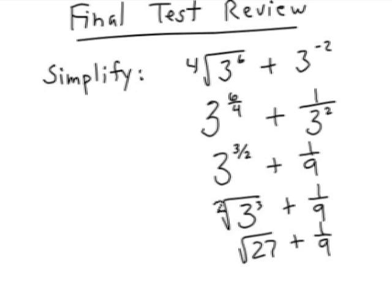Can you think of 27 as the multiple of a perfect square factor? Yes. 9 is a perfect square. So finally you would write 3 radical 3 plus 1 9th. Those are unlike terms. Final answer.